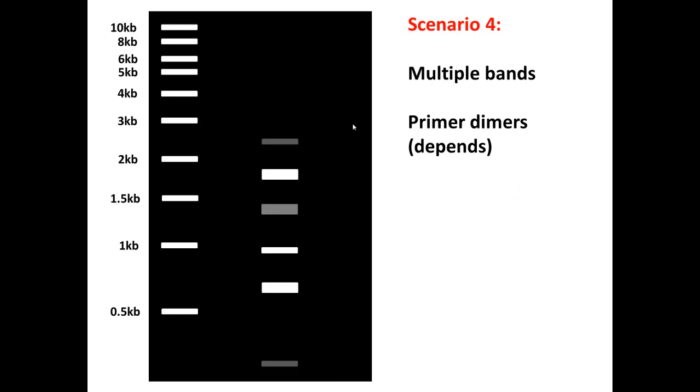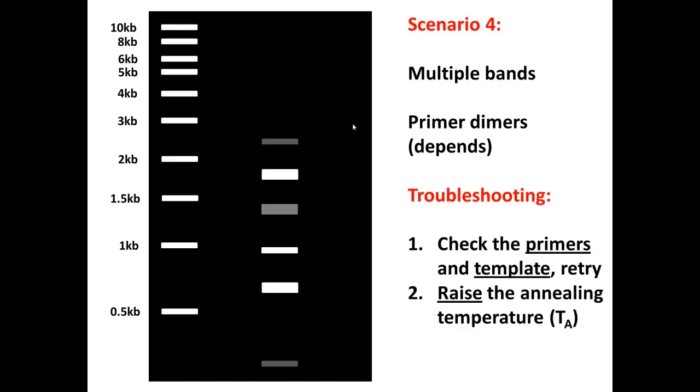Scenario four, we have multiple bands and the usual primer dimers. Again, I said this many times before, but this is very important. Check the primers and templates and you want to retry the experiment if those two things are good. This is another case of non-specific binding. So go ahead and raise the temperature, raise the annealing temperature and see if that solves the issue.